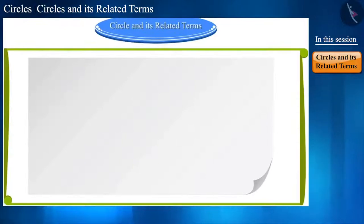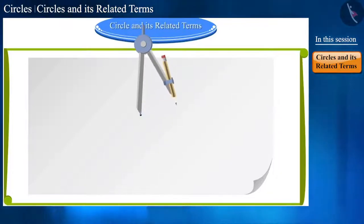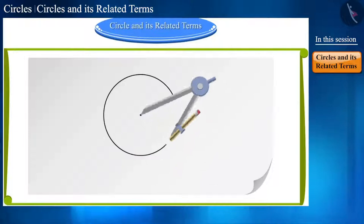Take a paper and fix a pencil in a compass. Now, position its pointed end at one point, keep its other arm at a steady distance and move it around in a circle once.